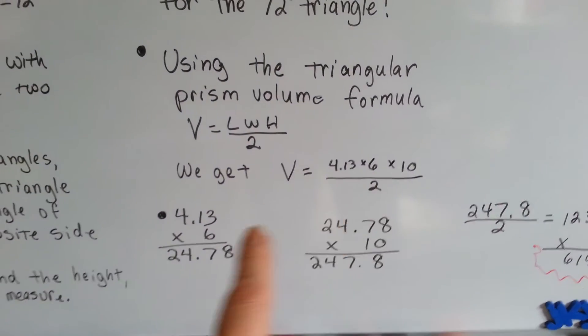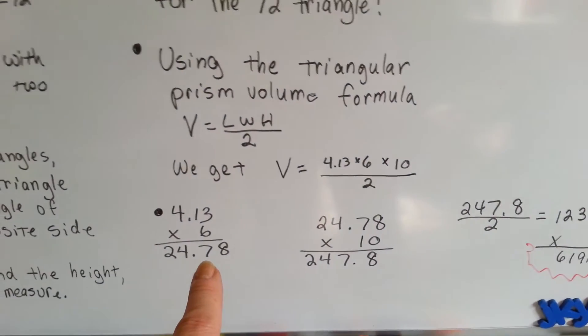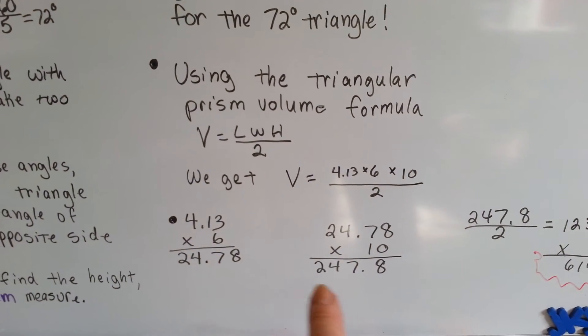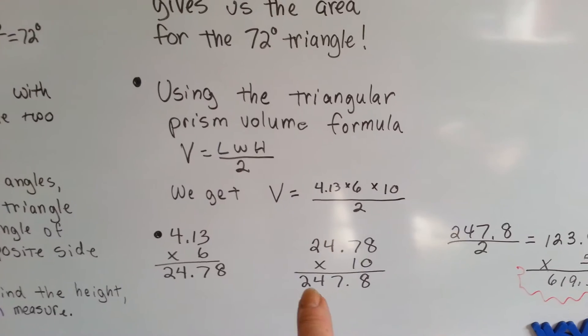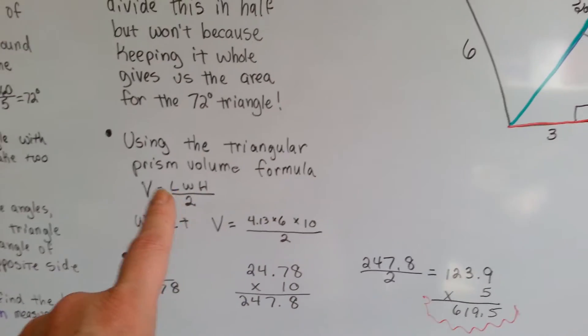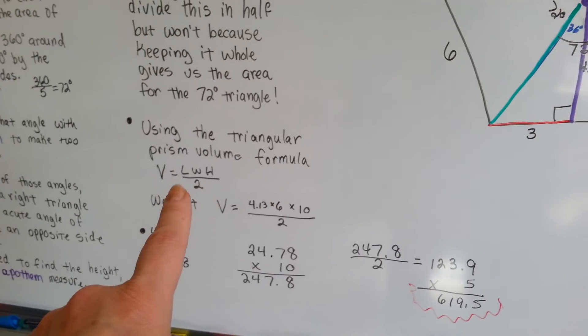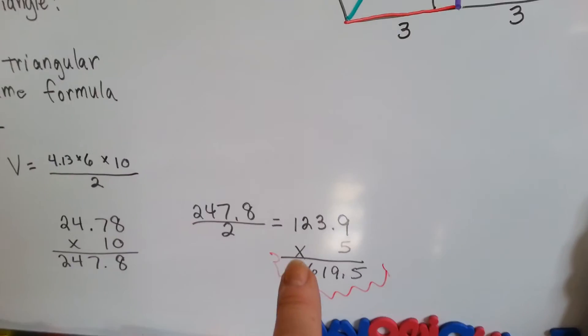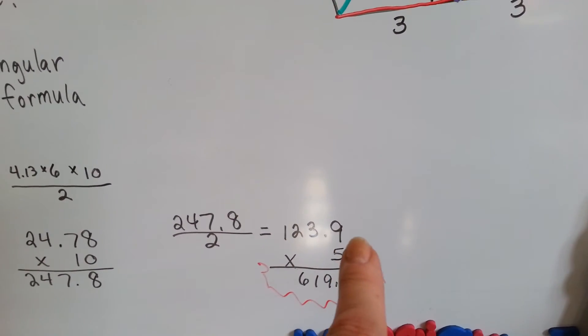We do our math, 4.13 times 6 is 24.78. Now, we need to multiply that by 10. That's easy, we just move a decimal space over, right? So, now we've got 247.8. Using this formula, we need to divide that in half, don't we? 247.8 divided by 2 comes out to 123.9.